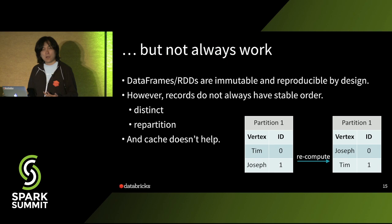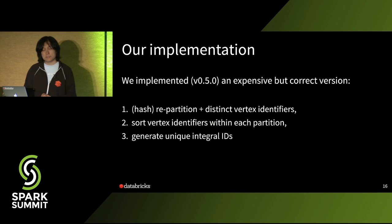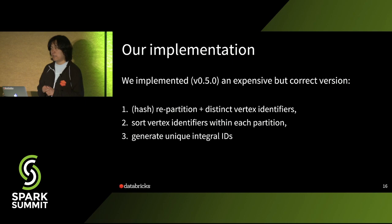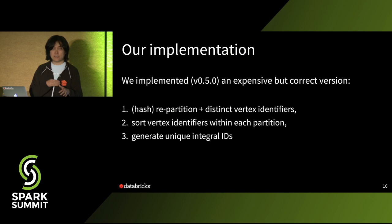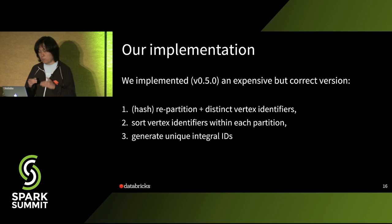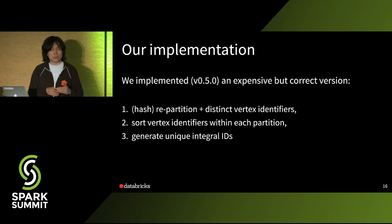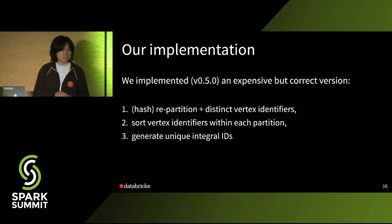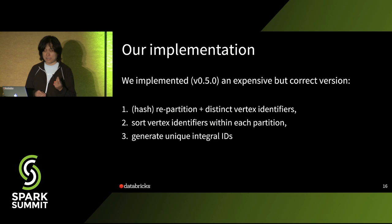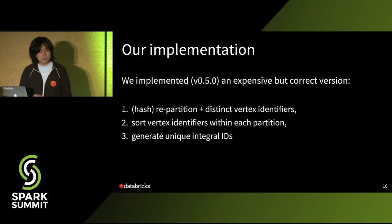We need to figure out how to guarantee a stable ordering. In our implementation in GraphFrames' most recent release: for the vertices dataset, we first do a hash partitioning, giving a deterministic mapping from each vertex to the target partition. Then inside the partition, we do a distinct to make sure each vertex only appears once, and then we order the vertex identifiers within each partition. Now you can guarantee that no matter how many times you recompute these DataFrames or datasets, the ordering is always stable. After that, we generate the unique integral ID using, for example, the UDF from DataFrames.